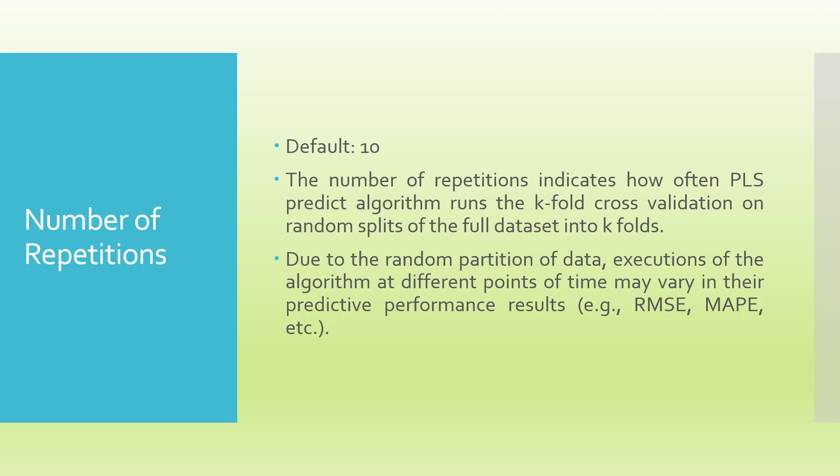After running this algorithm, errors will be generated for the linear model as well as the PLS model, and both errors will be compared. The comparison is done using RMSE (root mean square error), MAPE (mean absolute percentage error), and MAE (mean absolute error). Most of the time we compare RMSE and MAE, as mean absolute percentage error is a biased measure. We will only go for the PLS model if its error is less than the linear model.